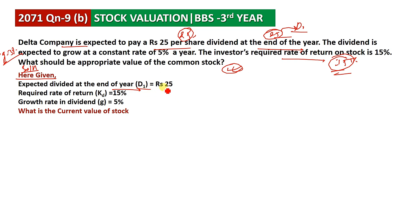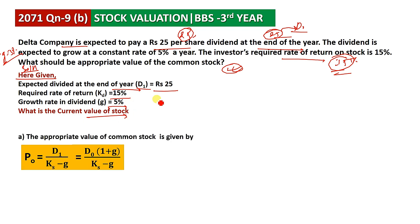Future tense — 'will be given at the end of the year' — means we use D1. Past and present tense, use D0. What is the current value of the stock? P0 equals D1 by Ks minus G.